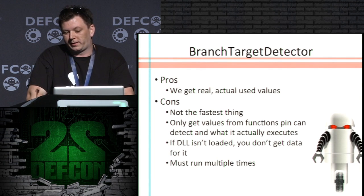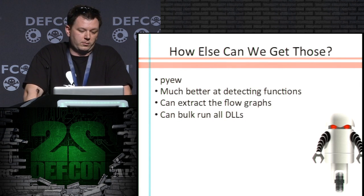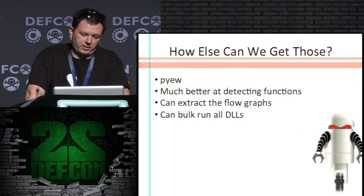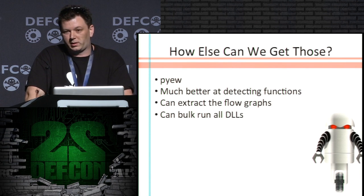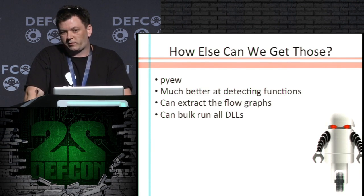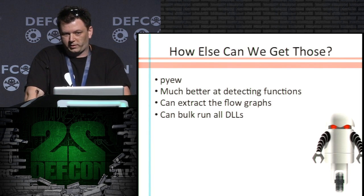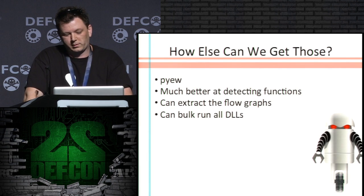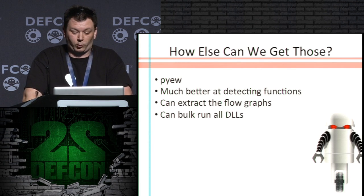I decided that wasn't a good idea, so I turned to PIU. It's much better at detecting these functions. You can extract the flow graphs and then bulk run them. I actually had to create a patch for PIU that I'm making available — at some point it will be put into the main trunk but I have to fix it first. It's much better; I get a lot more information much quicker.